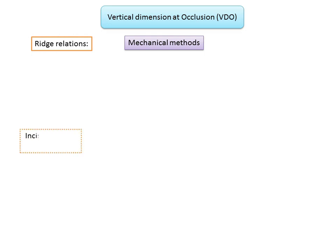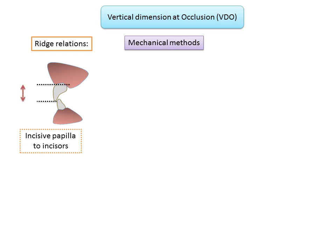Ridge relations: the distance from the incisive papilla to the mandibular incisors is used as a stable landmark because the incisive papilla does not change significantly with resorption of the alveolar ridge. The distance from the papilla to the maxillary incisal edge is 6 millimeters. Since the vertical overlap between upper and lower incisors is approximately 2 millimeters (the overbite), the distance from the incisive papilla to the lower incisors is approximately 4 millimeters. Based on this, VDO can be calculated.